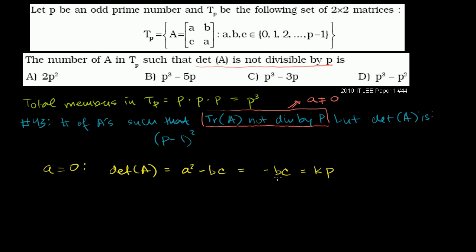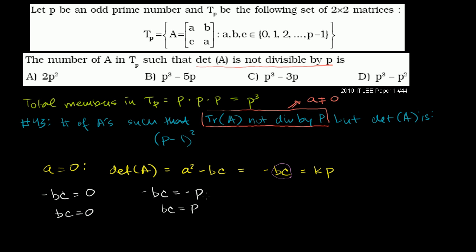Since b and c are both non-negative, the value bc cannot be negative, so negative bc cannot be positive. It can't be any positive multiples of p. It could be 0, giving negative bc equals 0, which means bc equals 0 — that's one possibility. Could it be negative p? That would mean bc equals p. But p is a prime number, its only factors are 1 and p. One of b or c could be 1, but then the other would have to be p, and they can't be p since they only go up to p minus 1. So this is not an option.